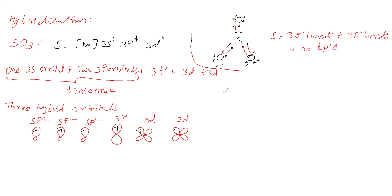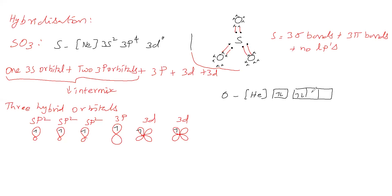Three oxygen atoms are taken. The first oxygen atom has electronic configuration helium 2s² 2p⁴. Its 2p orbitals are available for bonding.